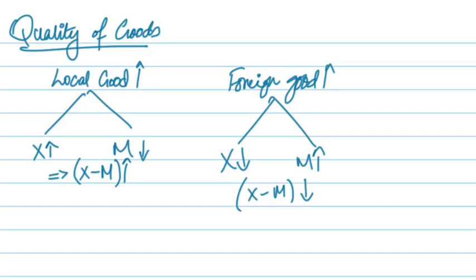So this is all about exports and imports — what affects the net exports and how the changes reflect in the exports and imports. In the next video, we'll talk about the multiplier in the open economy, and that will be the last video for aggregate expenditure. Thank you.